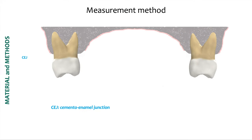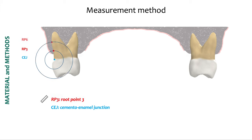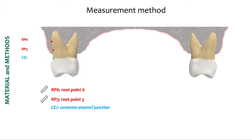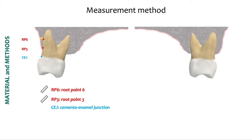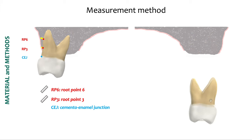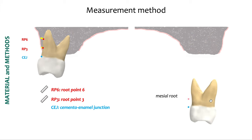The method of analysis consisted of placing a slice that followed the long axis of the first permanent molar and then identifying the CEJ. We then measured 3 mm from this point and another 6 mm from the CEJ point and measured the buccal bone thickness. This was done in both roots, the mesial and the distal root, as can be viewed in the slide.